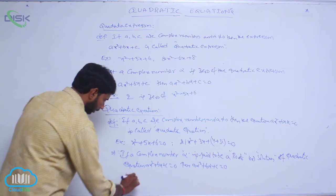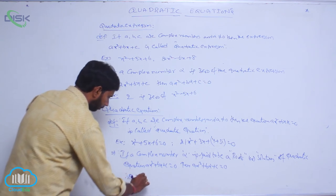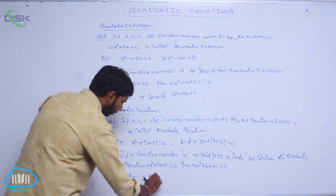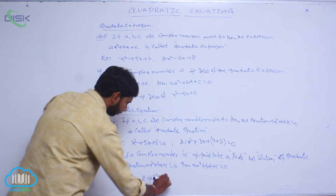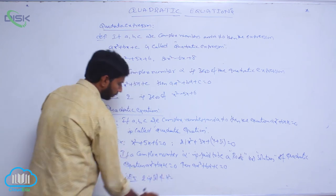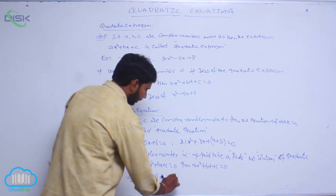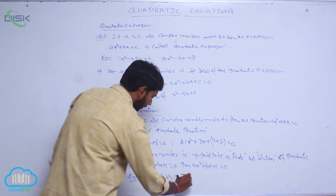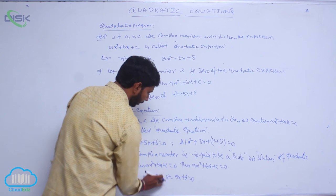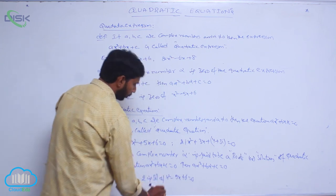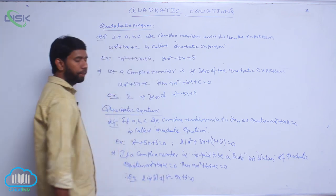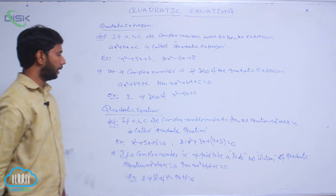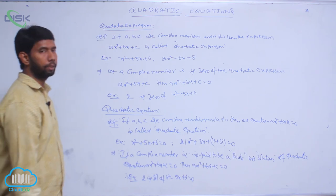For example, 2 is a solution of the equation x² - 5x + c = 0.